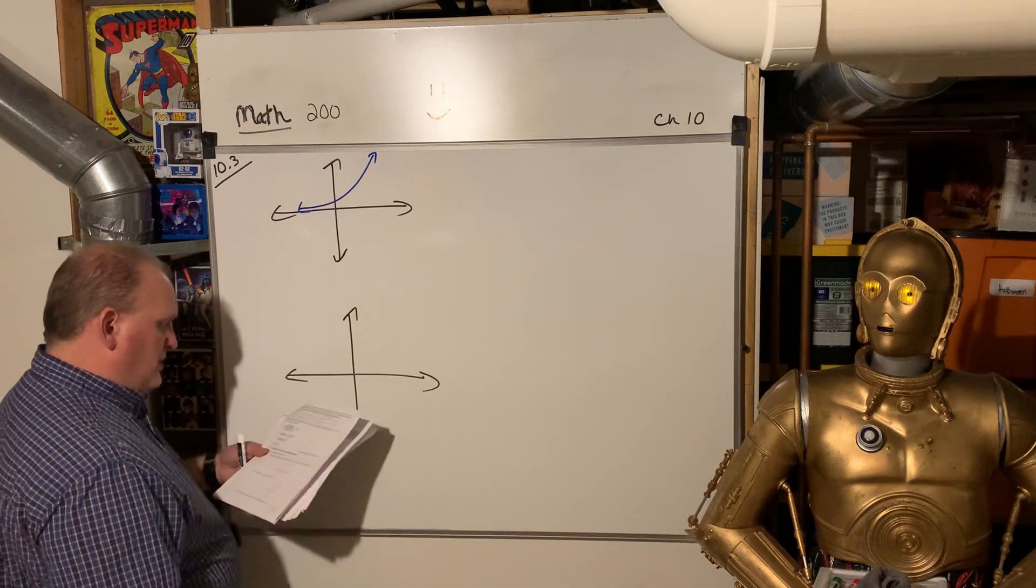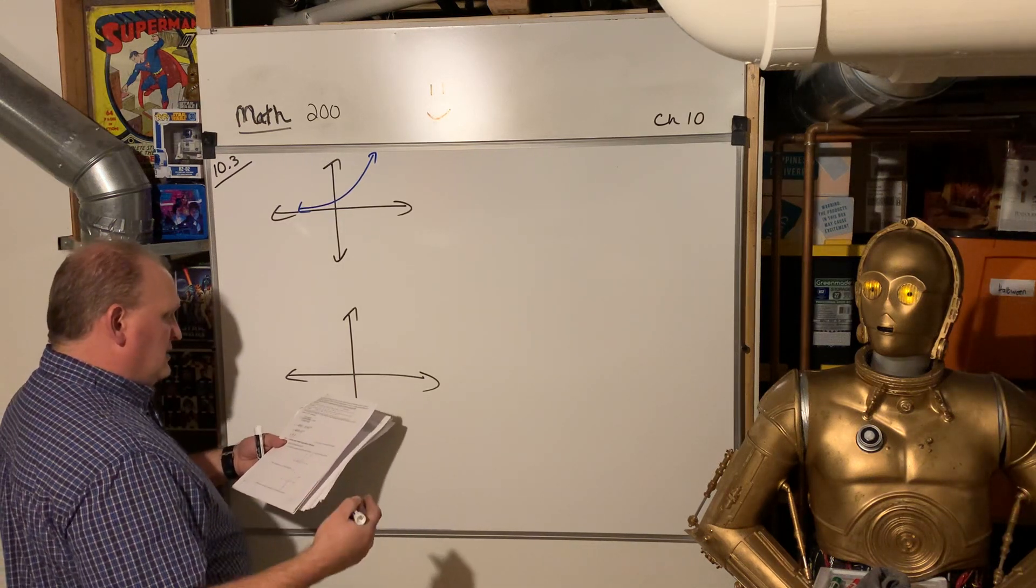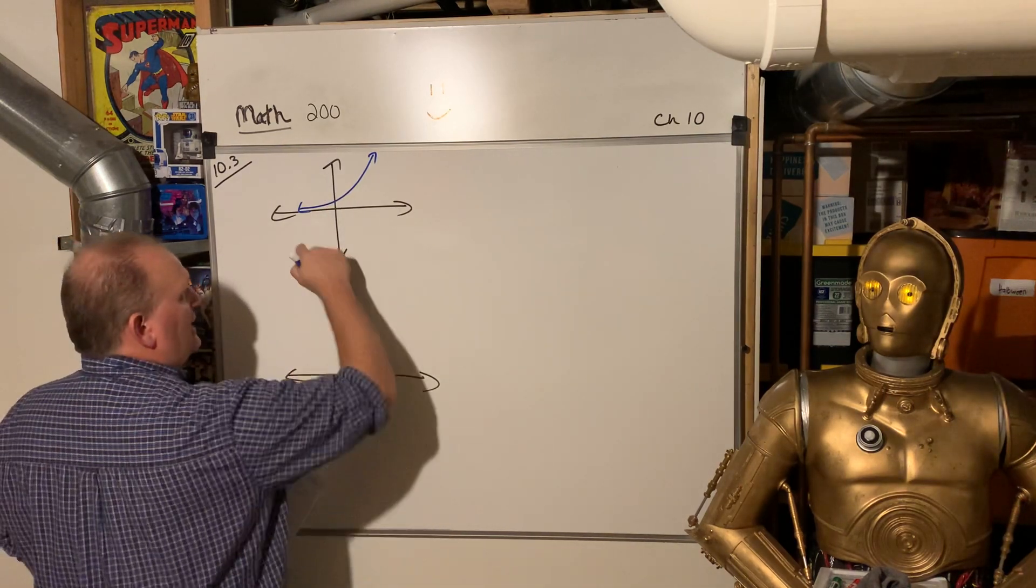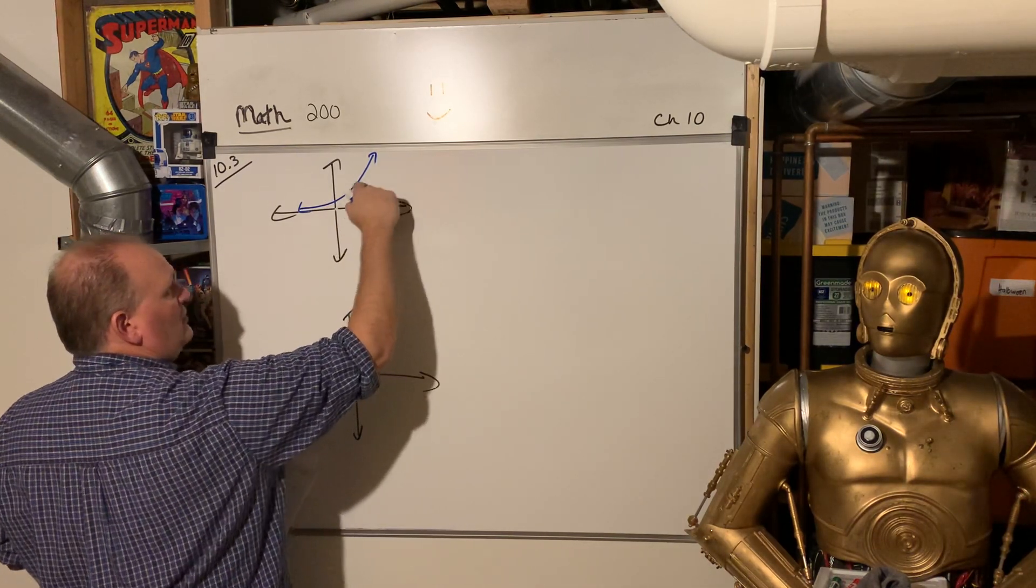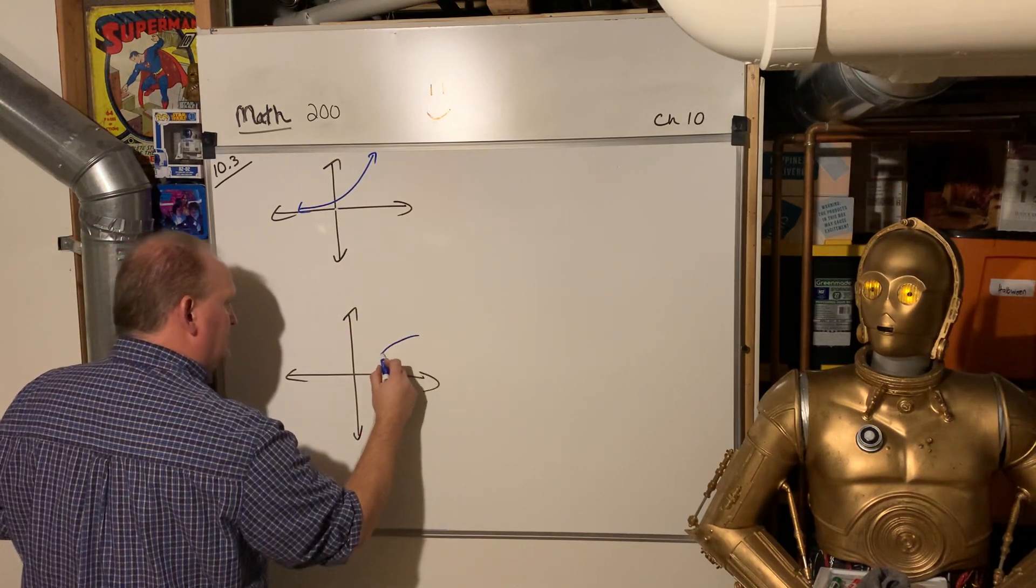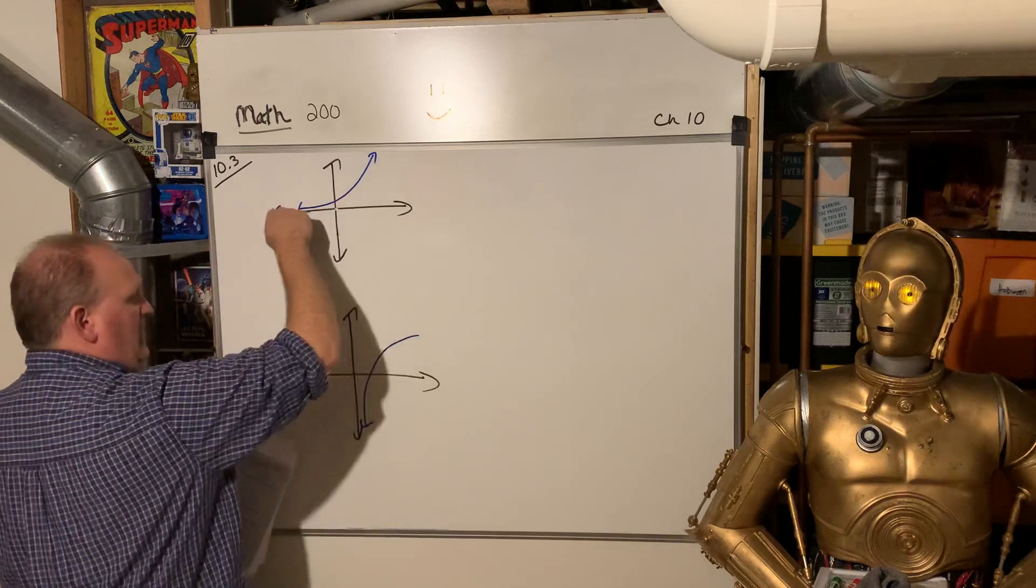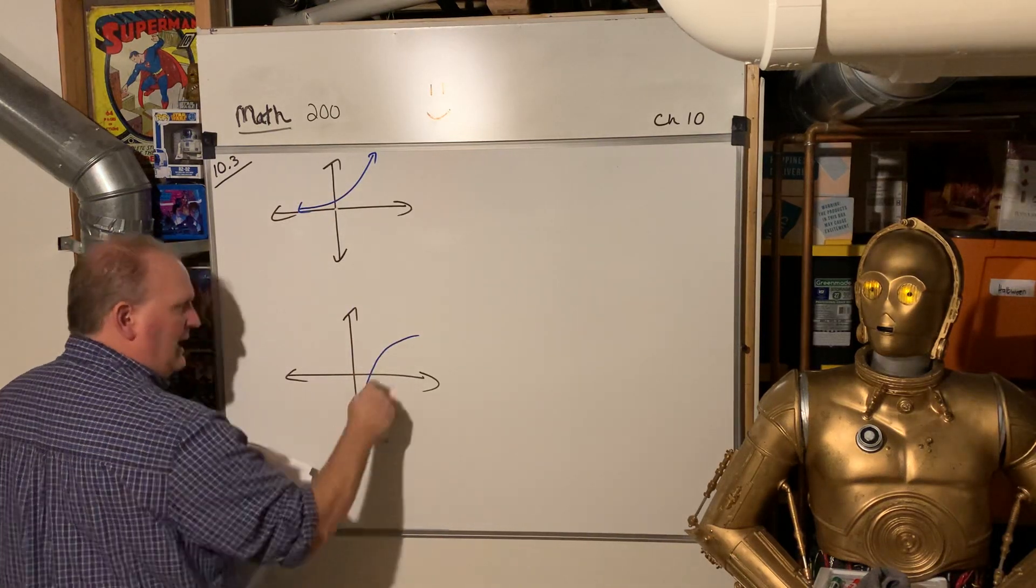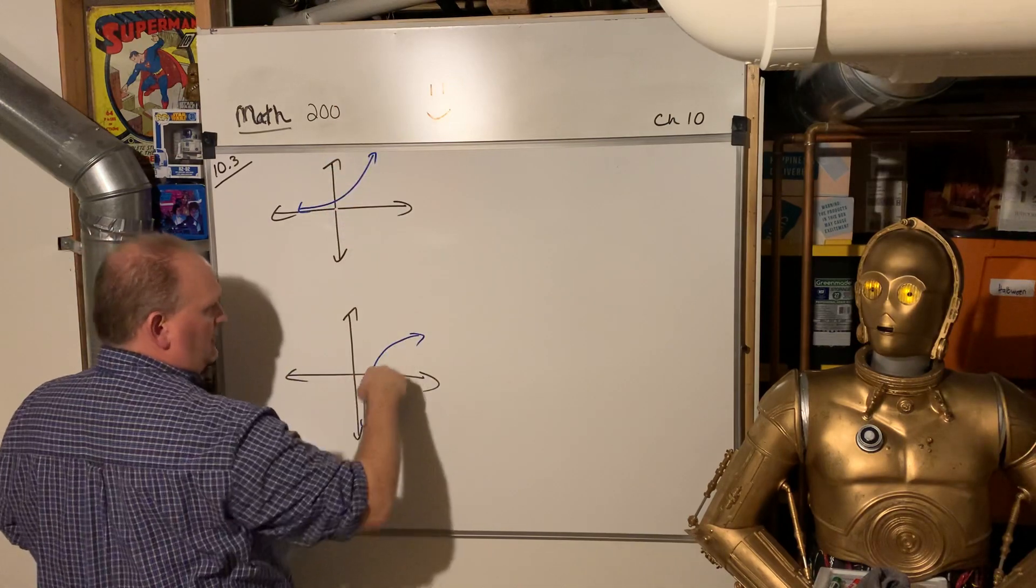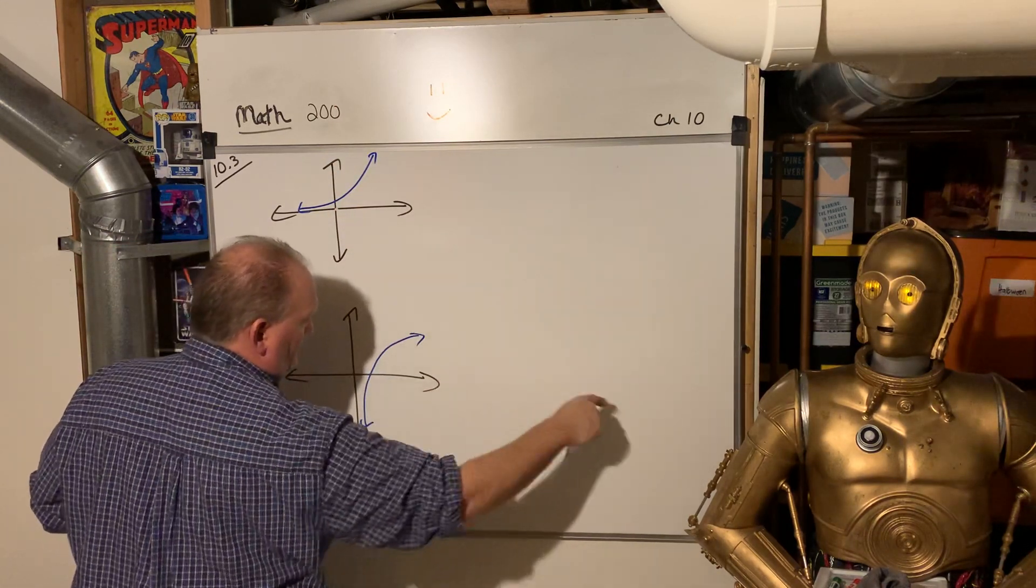But in 10.3, they want us to look at the inverse. So the inverse of this function, actually, remember, it flips it over y equals x. So it ends up being like this. Where instead of approaching x, it's approaching negative y. And instead of going up infinitely up x, it's going kind of up infinitely over y.